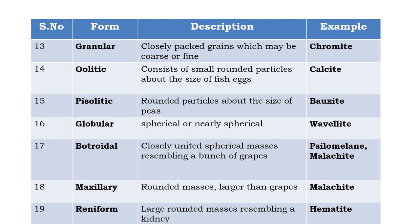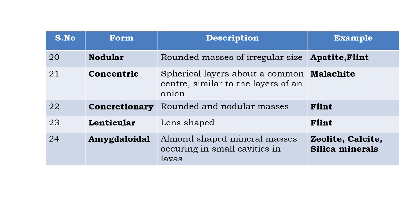Pisolitic form consists of rounded particles about the size of peas — the difference from oolitic is the size; example is bauxite. Globular form: the mineral appears as spherical or nearly spherical globules — example is wavelite. Botryoidal form exists as closely united spherical masses resembling a bunch of grapes — examples are stilpnomelane and malachite. Mammillary form consists of very rounded masses larger than botryoidal — example is malachite. Reniform means large rounded masses resembling a kidney — example is hematite. Nodular form means rounded masses of irregular size — examples are apatite and flint.